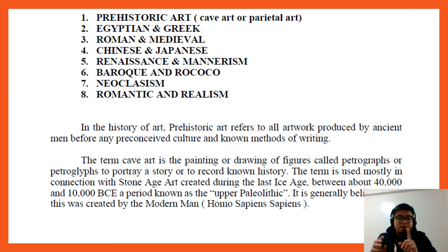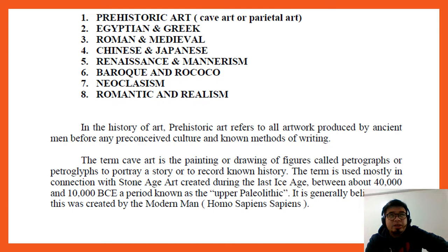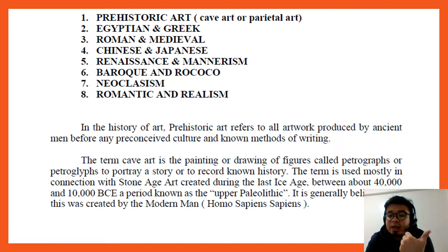We have at least eight periods, and this topic is covered in two parts because it is quite long. We have: prehistoric, Egyptian and Greek, Roman and medieval, Chinese and Japanese, Renaissance and Mannerism, Baroque and Rococo, Neoclassicism, and Romantic and Realism.